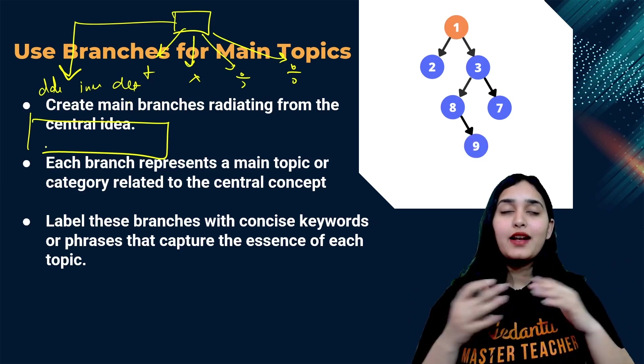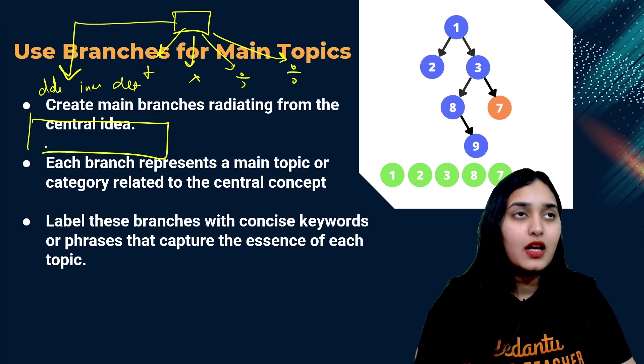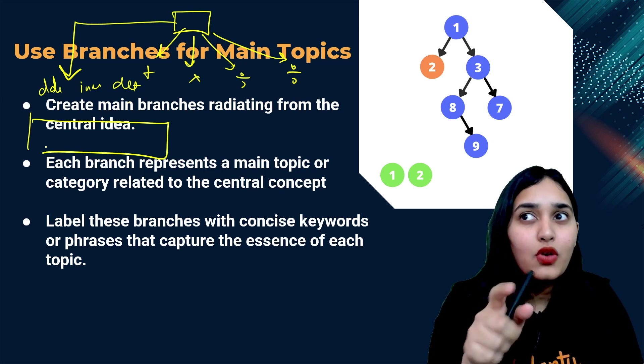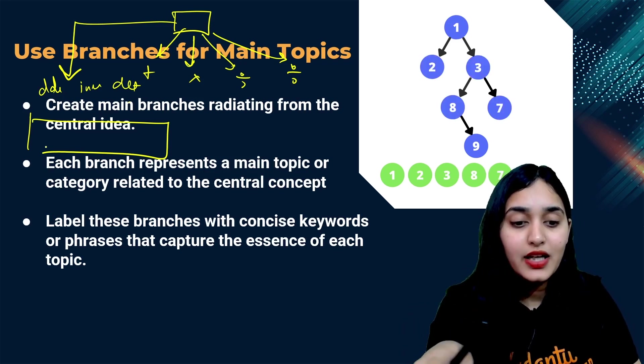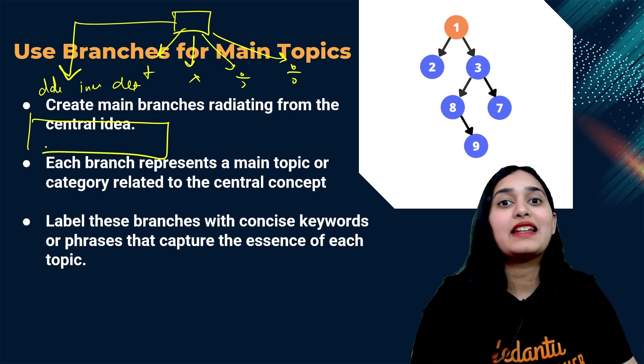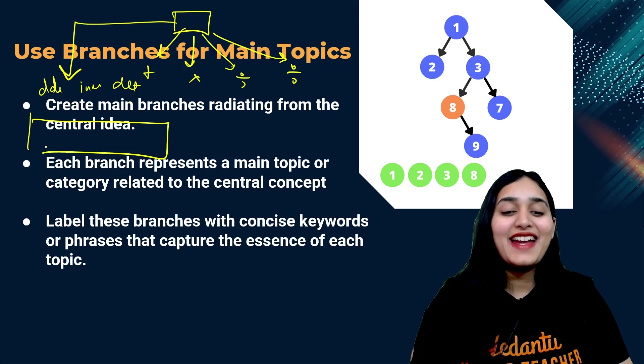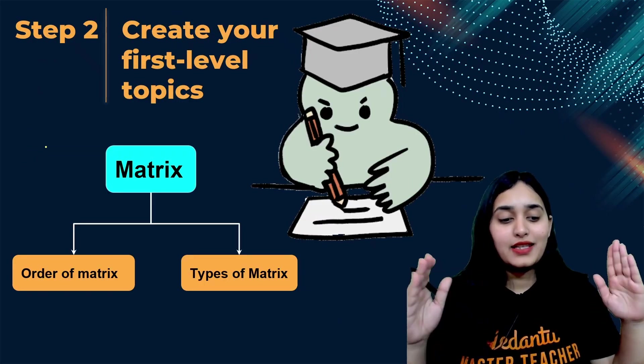So basically, once you make this flow chart, everything becomes more clear to you and you basically understand that only these are the things I have learned in this chapter and only these are the things important. And you will get a complete relaxation that, okay, apart from this, I don't have to do it. Otherwise, what happens is your mind keeps thinking, was there any other formula apart from this? Am I leaving any topic? Is there anything else I have to study? So that confusion basically wastes your time a lot. So we don't want that. And therefore, we'll draw a main topic and we'll start branching it out.